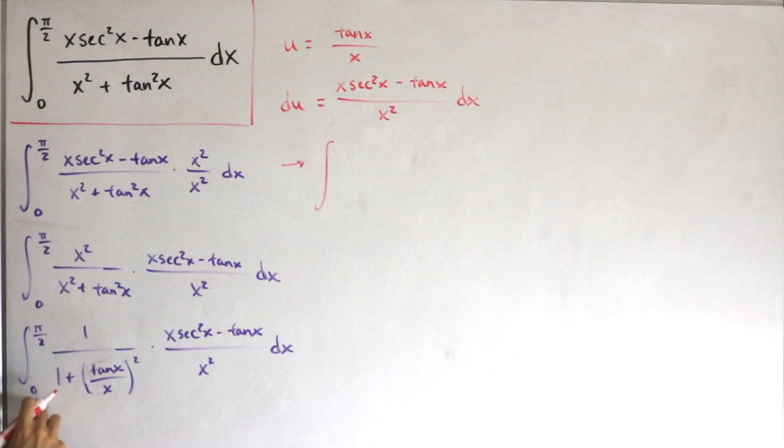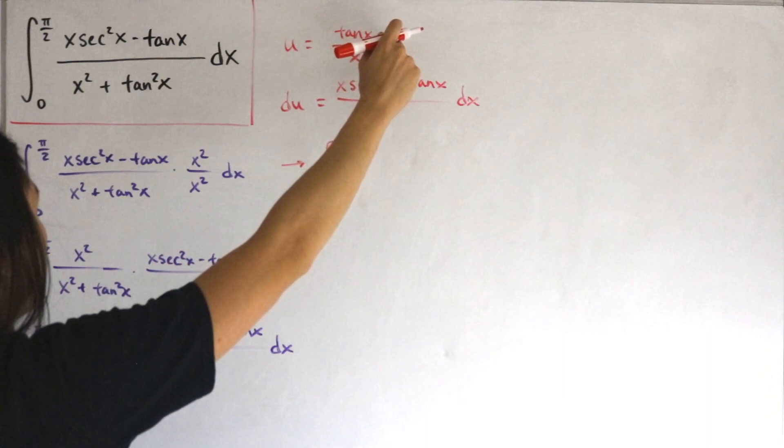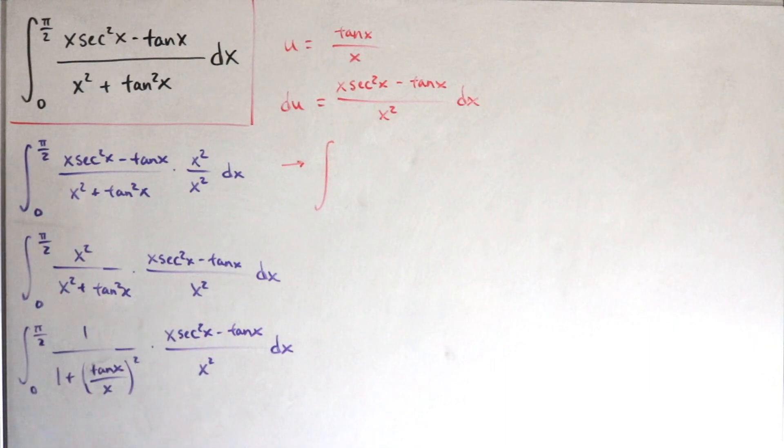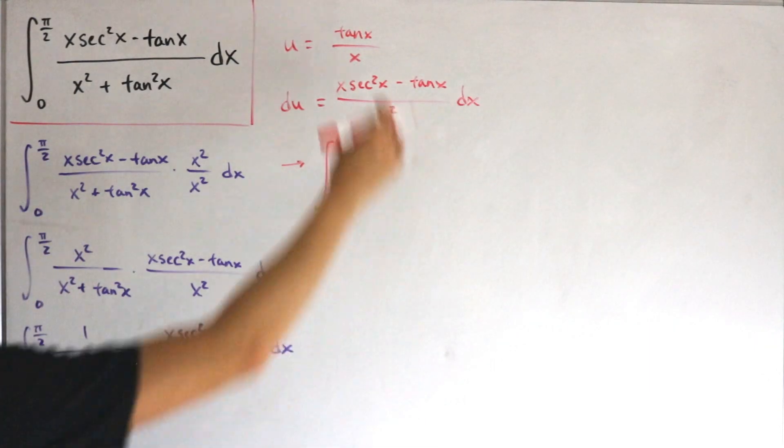If I plug in zero, we have 0/0 indeterminate form. But with that being the case, you can always apply L'Hôpital's rule as you take that limit. So the limit as x approaches zero of this function—take its derivative from both numerator and denominator.